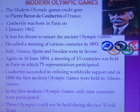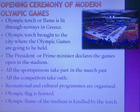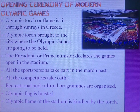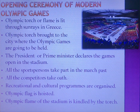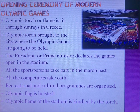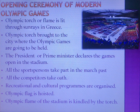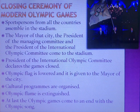The opening ceremony of Modern Olympic Games begins with the Olympic torch or flame being lit through sun rays in Olympia, Greece. It is then brought to the host city. On inauguration day, the President or Prime Minister declares the games open. Before the inauguration, all sports persons take part in the march past and all competitors take an oath. Then recreational programs are organized, the Olympic flag is hoisted, and the Olympic flame in the stadium is kindled by the torch through the best international player of the host country.